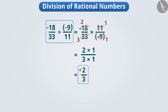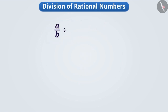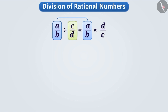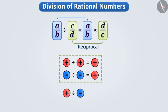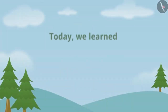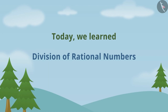So, what did we learn from this video? While dividing any two rational numbers, the first number is kept exactly the same and is multiplied by the reciprocal of the second number. If the sign of the numbers to be divided is the same, the result is positive. But if the sign of the numbers to be divided is different, the result is negative. Now you have learned how to divide rational numbers. In the next video, we will see some interesting examples related to this.